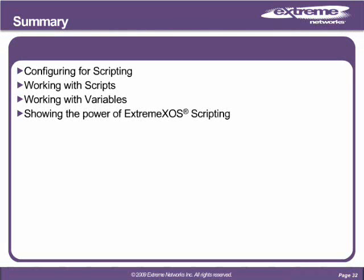In summary, Module 1 has discussed configuring for scripting, working with scripts, variables, and we showed off the power of EXOS scripting. Configuring for scripting covered CLI modes, abort on error and ignore error, persistent and non-persistent mode, and the difference between running a static script at the CLI versus a dynamic script. We introduced VI as a function on the switch, alternate programs for different platform types, discussed what a variable is - a named container for data - and again saw the magic of EXOS scripting.